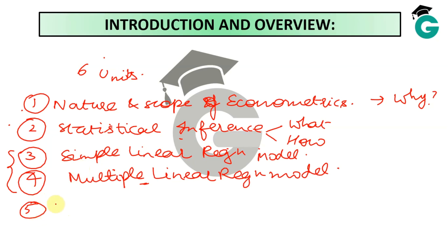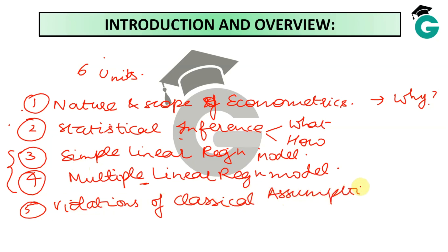The fifth unit talks about violations of the classical assumptions. By the time we get here, you may feel a bit exhausted with everything that has happened and kind of take this lightly. I would strongly suggest not taking this unit lightly. Number one, because if they wanted to make the paper difficult, the things they would test you on would come from this unit. This can be twisted in ways where you may be expected to recognize the violations, instead of just being asked to describe a particular violation.